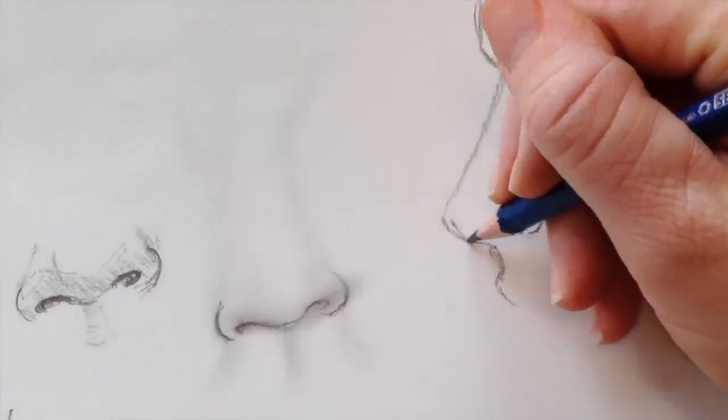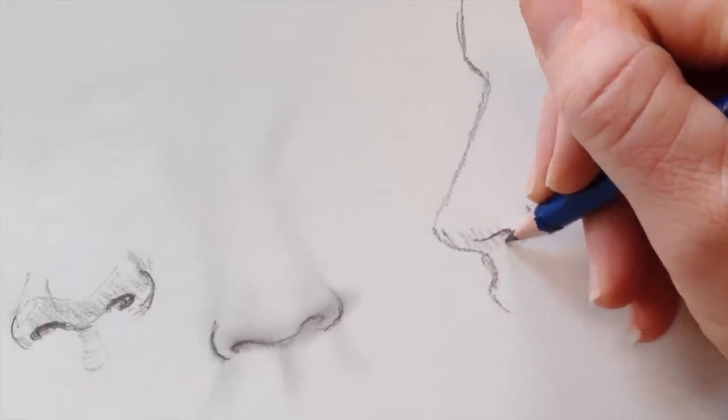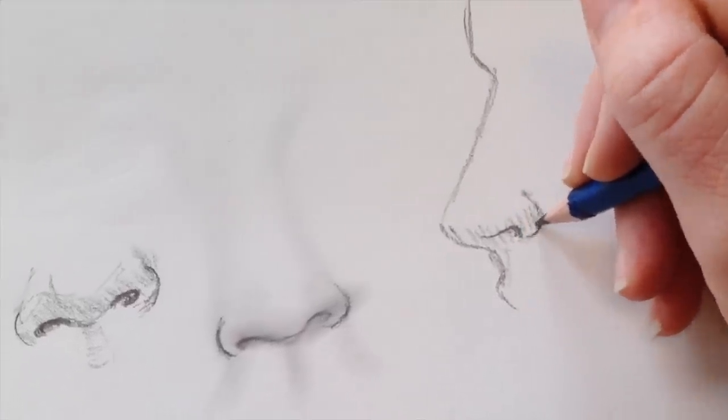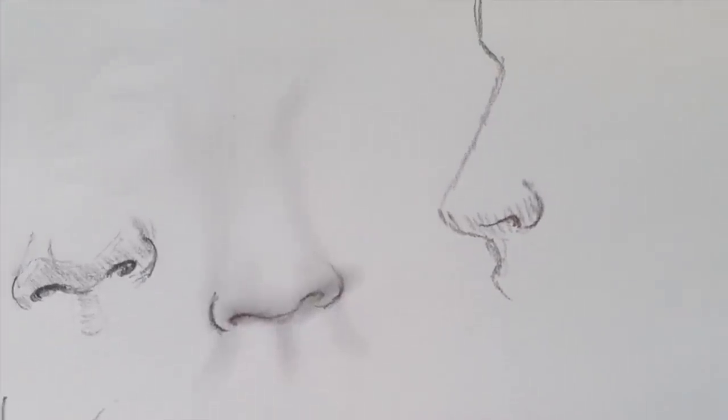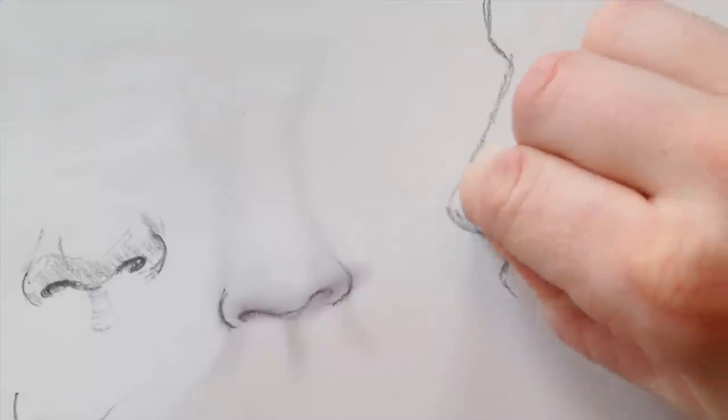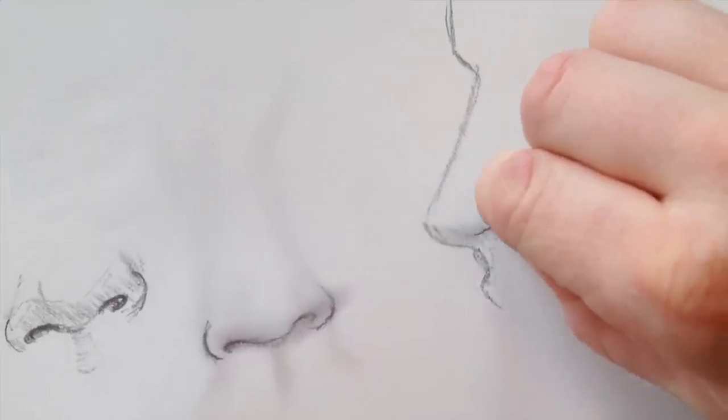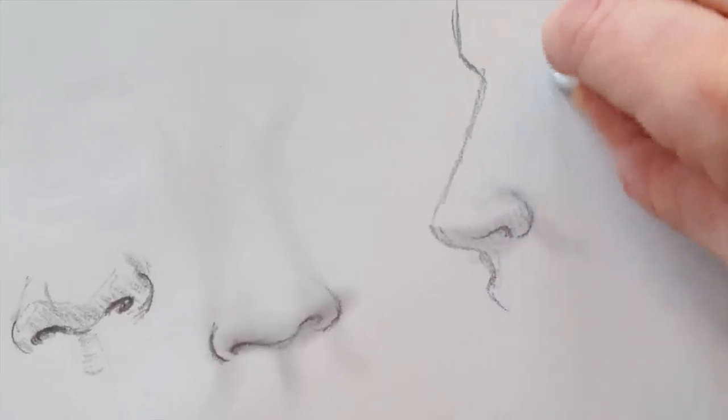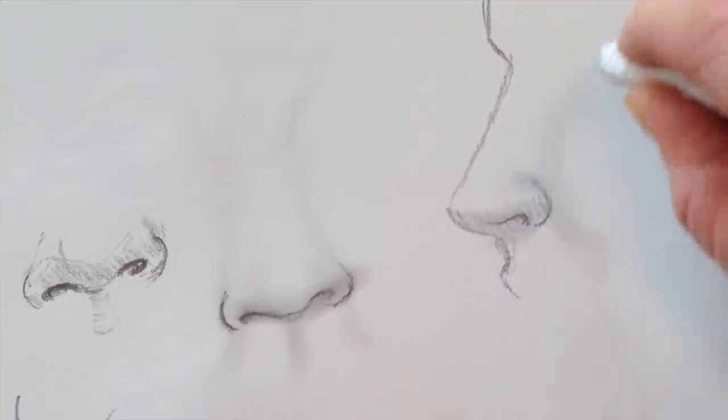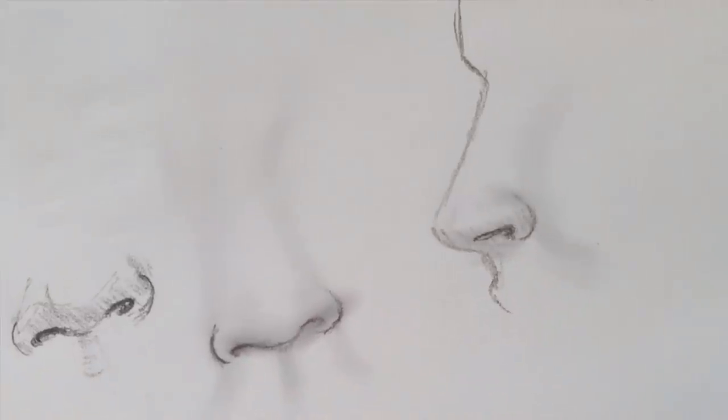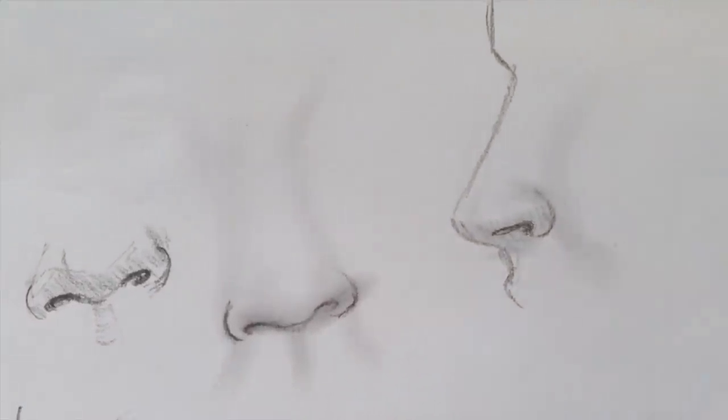Then there's usually a shadow underneath it. You can smudge it out and add those shadows in - that's a pretty quick way to make a realistic-looking nose. I hope you enjoyed this tutorial and have a great day.